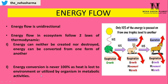Whenever energy moves from producer to herbivore, 90% of the energy is lost to the environment and only 10% is transferred. Similarly, from herbivore to carnivore, only 10% is transferred and 90% is lost. The lost energy is actually utilized by the organism for its own purposes like excretion, respiration, growth, and movement. So 90% of energy gets lost and only 10% is transferred from one trophic level to another.